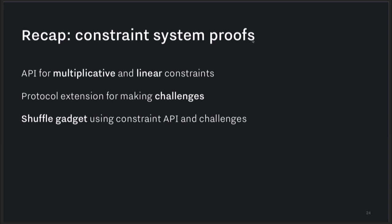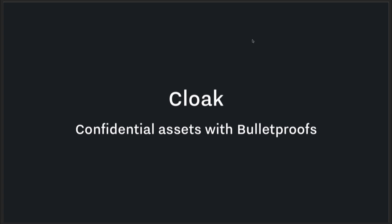As a recap: I explained what constraint system proofs are and why we care about constraints. I showed the API for making multiplicative and linear constraints. I talked briefly about the protocol extension for making challenges from the constraint system to make proofs semi-interactive. And I walked through a shuffle gadget that uses the constraint API and challenges. It's really just one line per constraint, called directly into the API. Now that we have this cool library, we decided to build a more complex protocol over it — specifically, confidential assets.